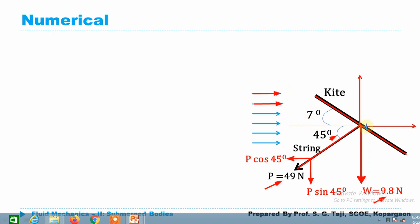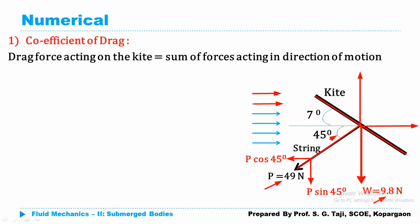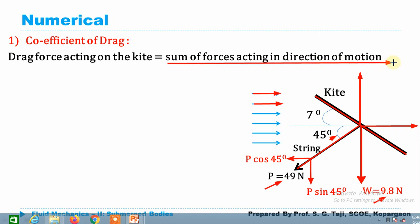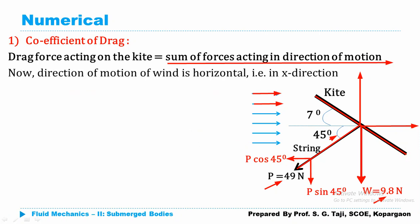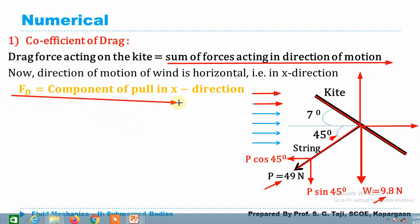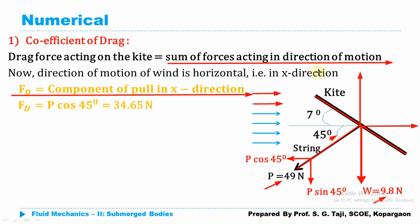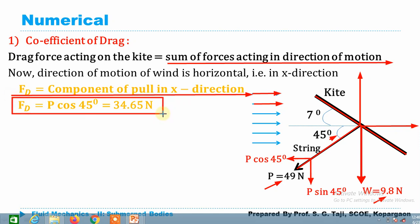The drag force acts along the direction of motion, and the lift force acts normal to the direction of motion. The drag force is given by the sum of forces in the direction of motion. The only force acting in that direction is P·cos45, so FD = P·cos45.